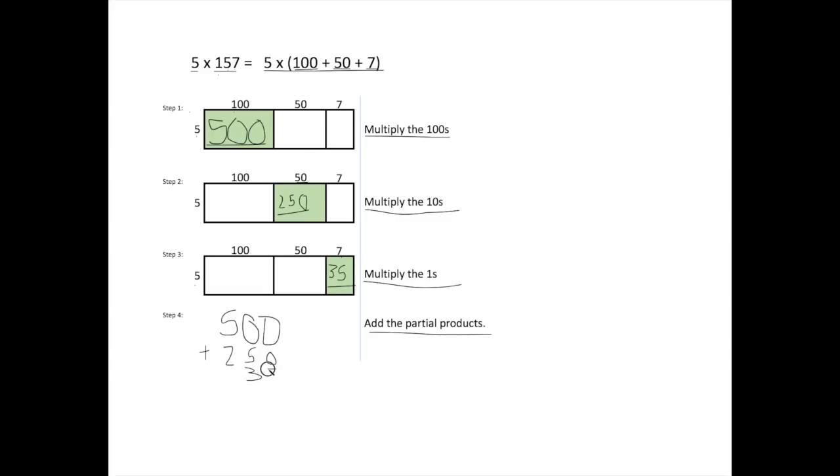And since these are our partial products or part of our answer, we have to add it all together. So 0 plus 0 plus 5 equals 5, 0 plus 5 plus 3 equals 8, and 5 plus 2 plus nothing equals 785. So we know that the total product of 5 times 157 is 785.